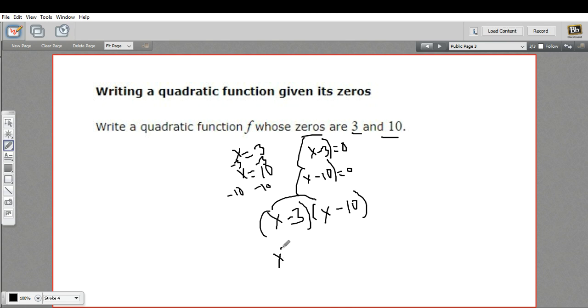So x times x is x squared. x times negative 10 is minus 10x. Negative 3 times x is minus 3x. And negative 3 times negative 10 is a positive 30. So I am getting x squared, and we'll combine the negative 10x and negative 3x to get negative 13x plus 30.